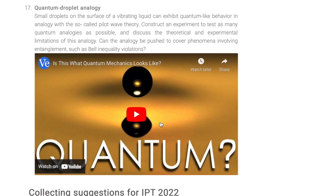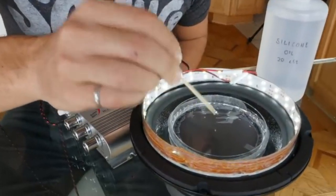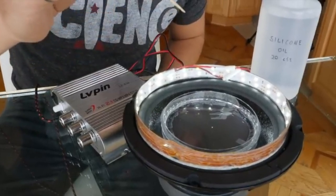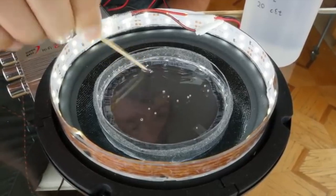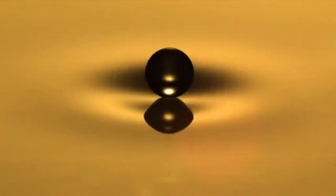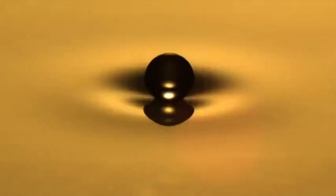Quantum droplet analogy. Small droplets on the surface of a vibrating liquid can be an analogy of quantum-like behavior with the so-called pilot wave theory. Construct an experiment to test as many quantum analogies as possible, and discuss the theoretical and experimental limitations of this analogy.